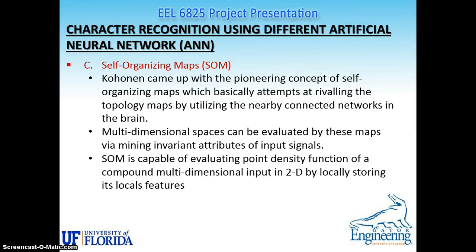The final type of neural network we are going to discuss is the self-organizing maps. The pioneer of this kind of map is known as Kohonen, and he came up with the pioneering concept of self-organizing maps, which basically attempts at evaluating the topology maps by utilizing the neural contact networks in the brain. Multidimensional spaces can be evaluated by these maps via mining invariant attributes of input signals. The self-organizing map is capable of evaluating the point density function of a compound multidimensional input in 2D by locally storing its local features.